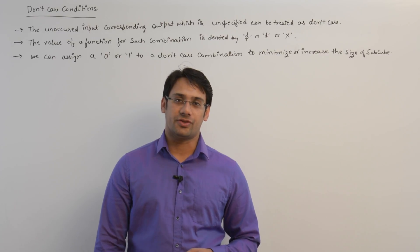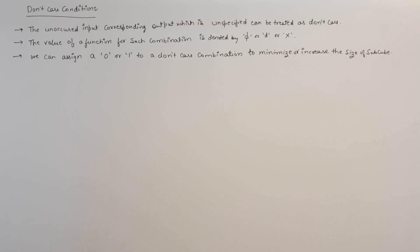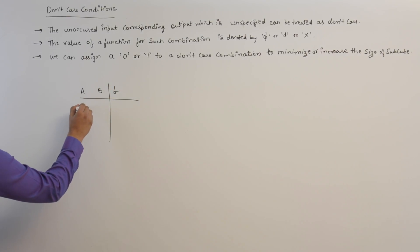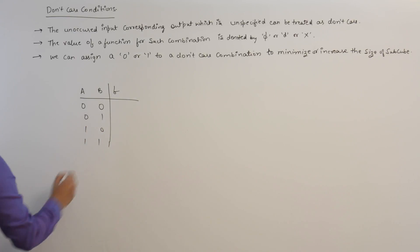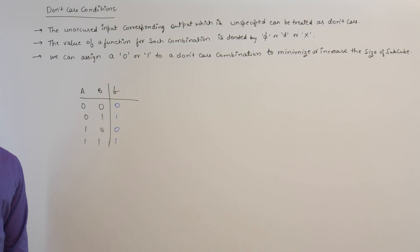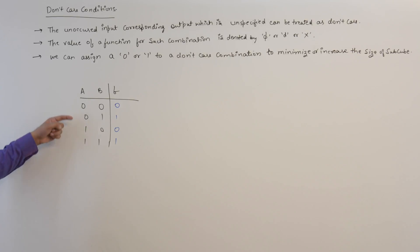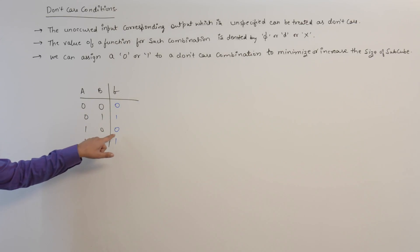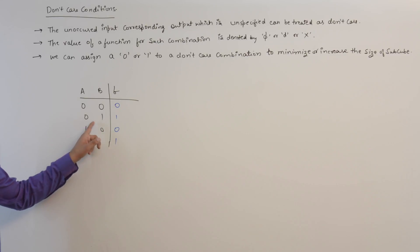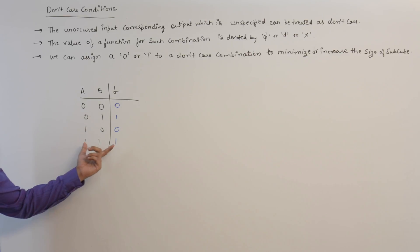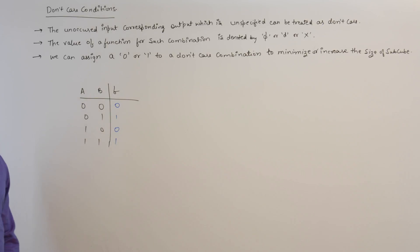Let us look at what is a don't care combination. If you take a function of two variables A and B, the combinations of A and B can be 00, 01, 10, and 11. The function F can take any values — for example, 0, 1, 0, 1. In this case the function is said to be completely specified, because for every combination of A and B we are specifying a value for the function F. This kind of function is called a completely specified function.